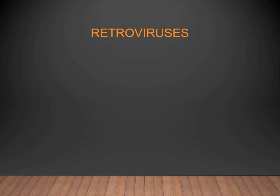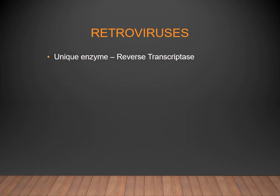HIV belongs to the retroviruses. What is peculiar about these retroviruses is that they have a particular enzyme — reverse transcriptase. The central dogma of protein synthesis goes from DNA to RNA to protein, but here instead of going from DNA to RNA, it goes from RNA to DNA, due to the presence of reverse transcriptase.